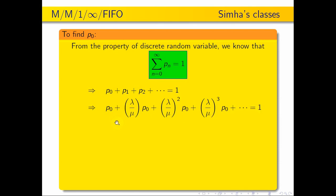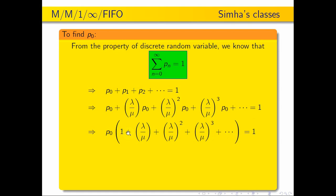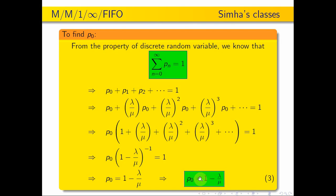Taking P0 outside, I can write this as P0 into 1 plus lambda by mu plus lambda by mu whole square plus lambda by mu whole cube plus etc., equal to 1. This series equals 1 minus x whole power minus 1, where x is lambda by mu. So I can write P0 into 1 minus lambda by mu, whole inverse, equal to 1. Therefore P0 is equal to 1 minus lambda by mu.